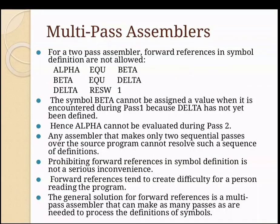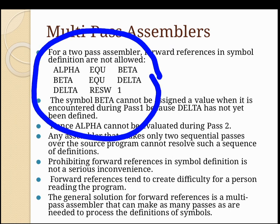Today we'll be talking about multi-pass assemblers. In the given set of instructions, beta cannot be resolved in the first pass and hence alpha cannot be resolved in the second pass. The solution to this problem of forward reference is to use a multi-pass assembler — an assembler that makes as many passes as necessary to process the definition of symbols.